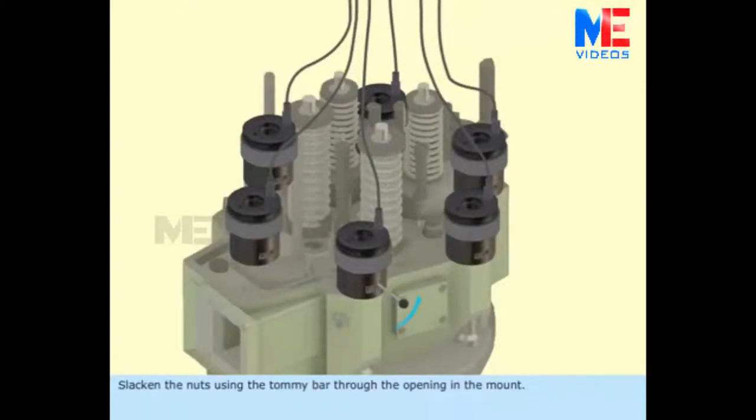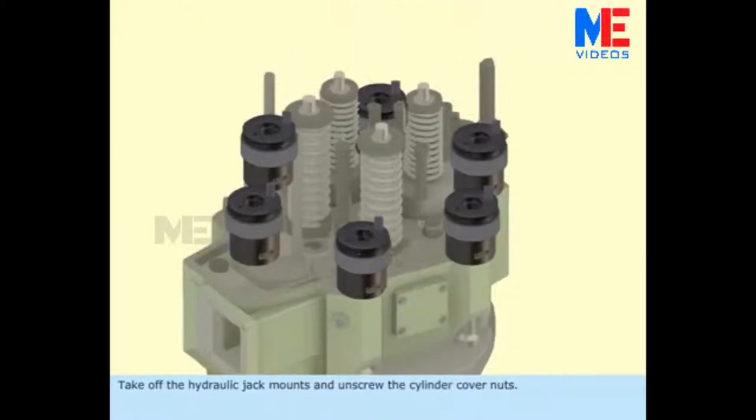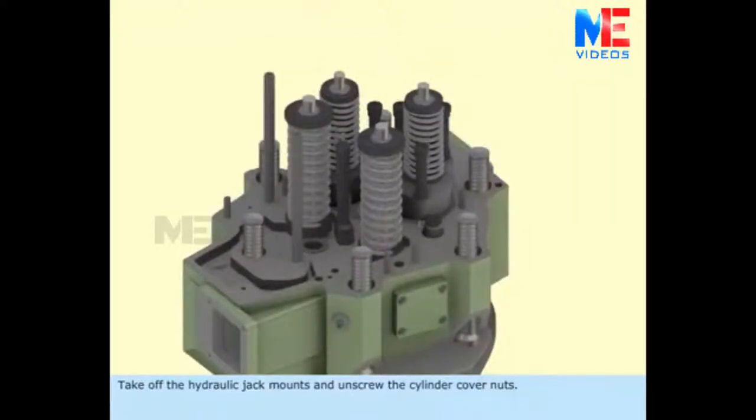Slacken the nuts using the tommy bar through the opening in the mount. Take off the hydraulic jack mounts and unscrew the cylinder cover nuts.